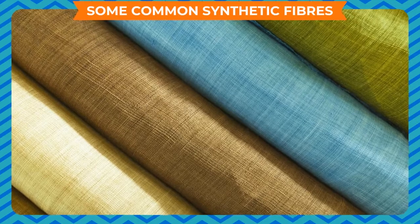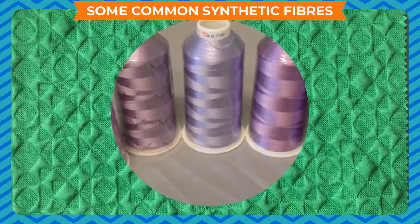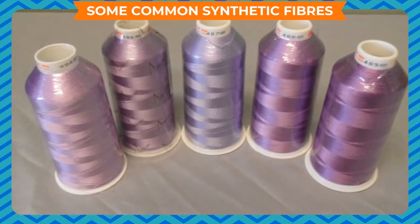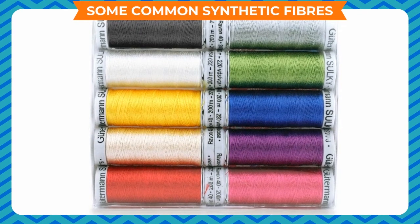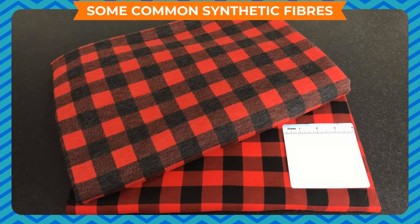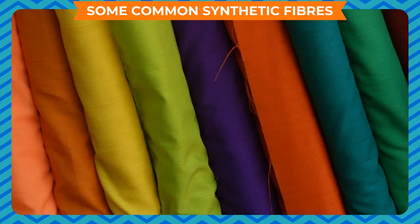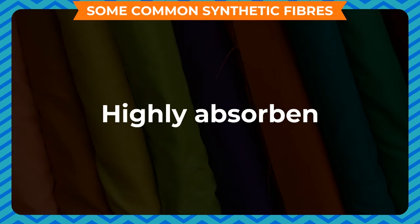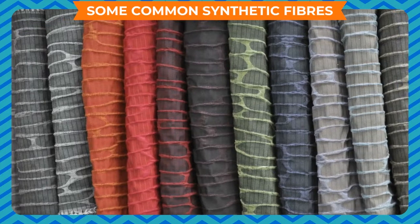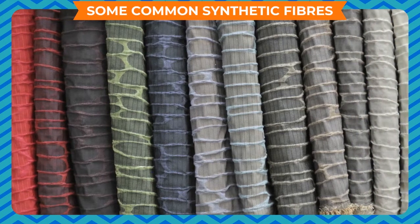Some common synthetic fibers. Rayon is also called artificial silk as it has properties similar to that of silk. Rayon is a regenerated cellulose fiber obtained by chemically modifying naturally occurring cellulose from wood. It has properties which make it similar to natural fiber: soft, smooth, cool, comfortable and highly absorbent. The disadvantage is that it insulates body heat and thus is not suited for use in summers.